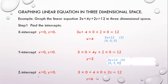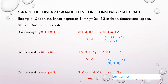For the z-intercept, x = 0 and y = 0. So 3(0) + 4(0) + 2z = 12, which gives us 2z = 12. Dividing both sides by 2 — because the coefficient of z is 2 — we get z = 6. So the ordered triple for the z-intercept is (0, 0, 6).